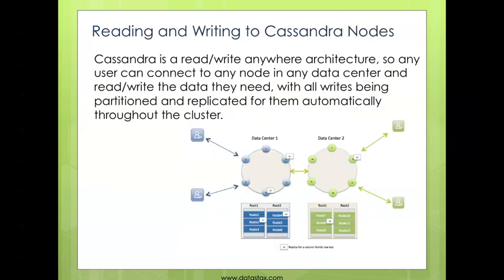The other thing that you need to keep in mind is, even though data is replicated across all the nodes in your cluster, you really don't have to worry about where you read or write. Cassandra is a read-write-anywhere architecture, so you can connect to any node in any one of your data centers, read and write data from that, and Cassandra is going to take care of automatically partitioning and replicating that data throughout all the nodes in your cluster. There's nothing special that you have to do.